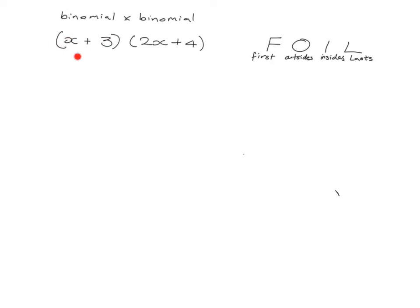So this here is a binomial because it's got x and three as the terms. It's got two terms, and here's another binomial because it's got two x and four as the terms. So a binomial has two terms.